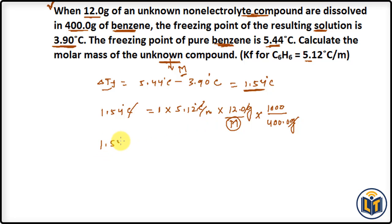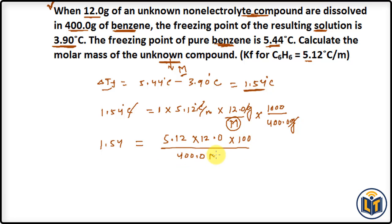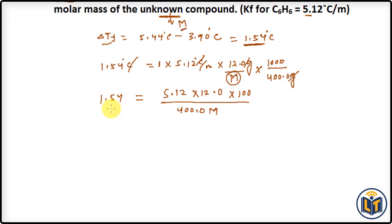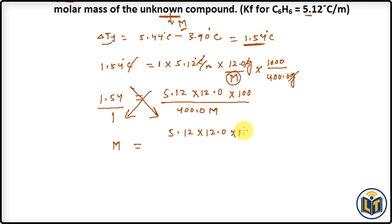So we have: 1.54 equals 5.12 times 12.0 times 1000 divided by (400.0 times M). We do cross multiplication to find M, transferring M to the left side and the other values to the right side. This gives: M equals (5.12 times 12.0 times 1000) divided by (400.0 times 1.54).